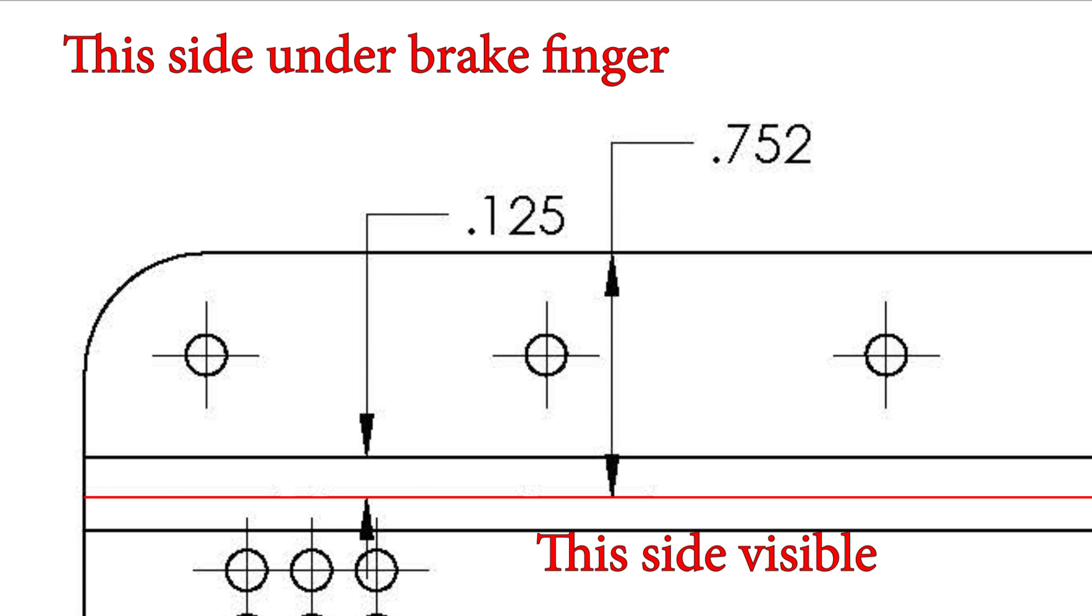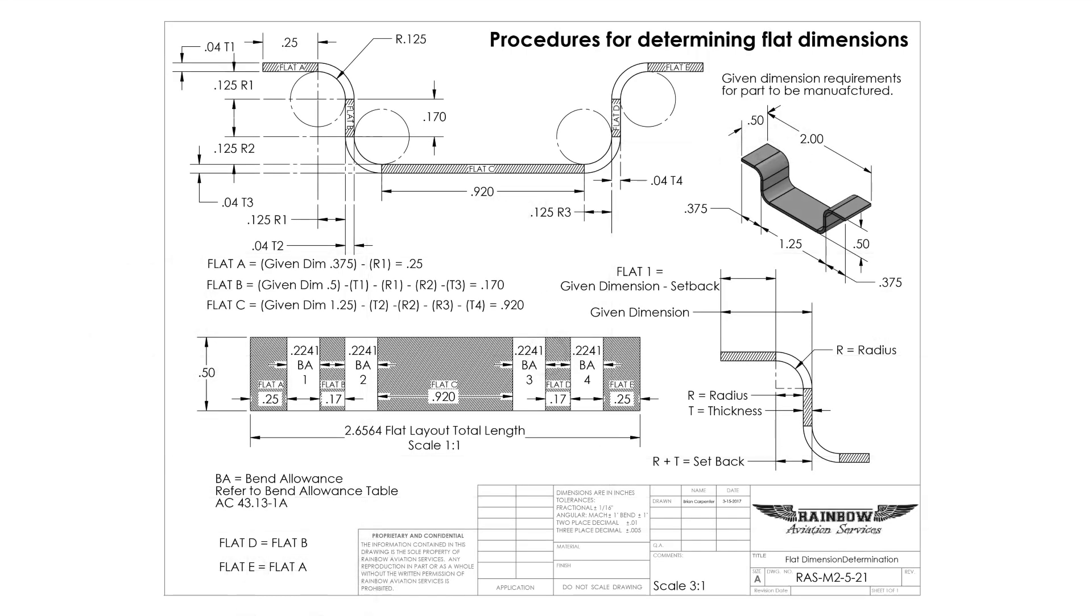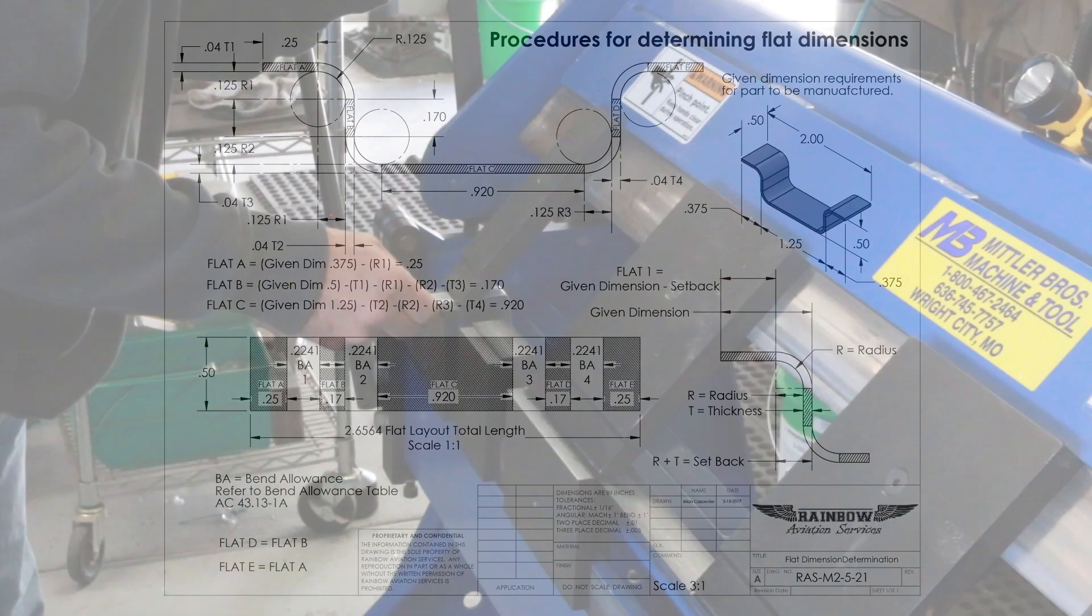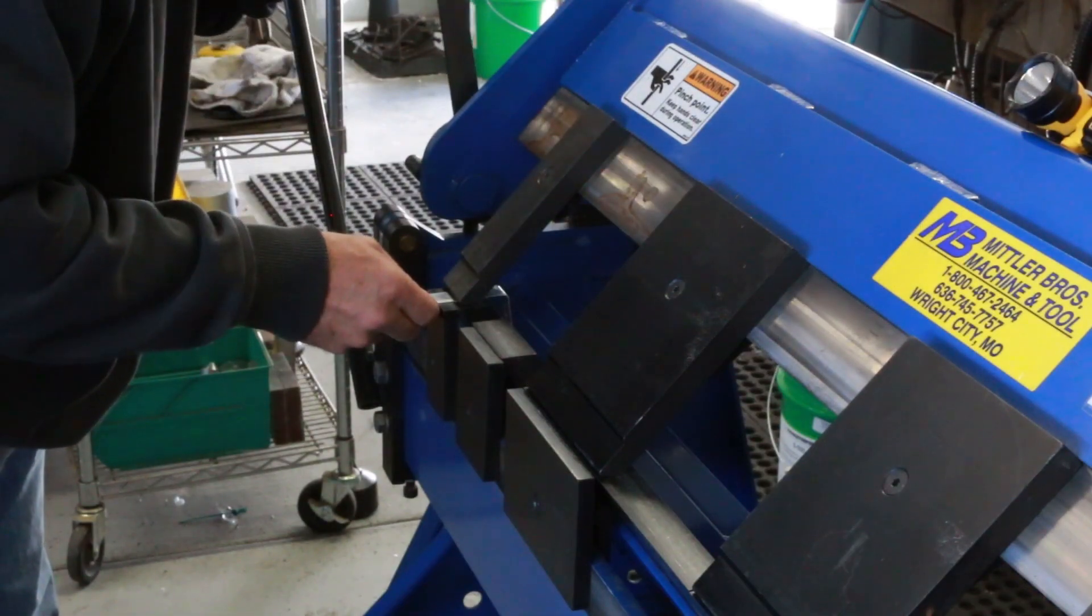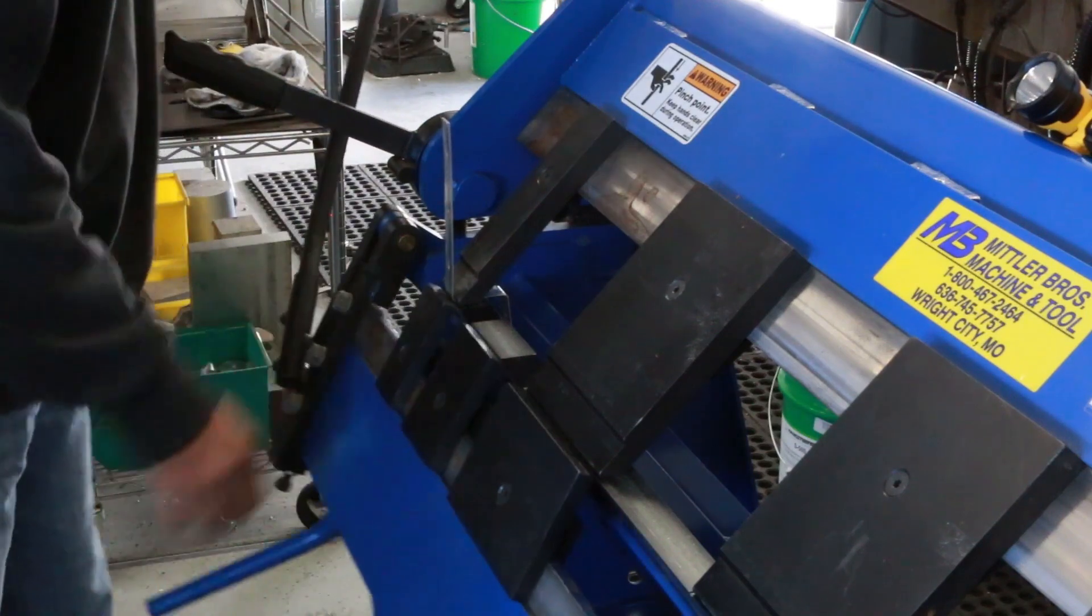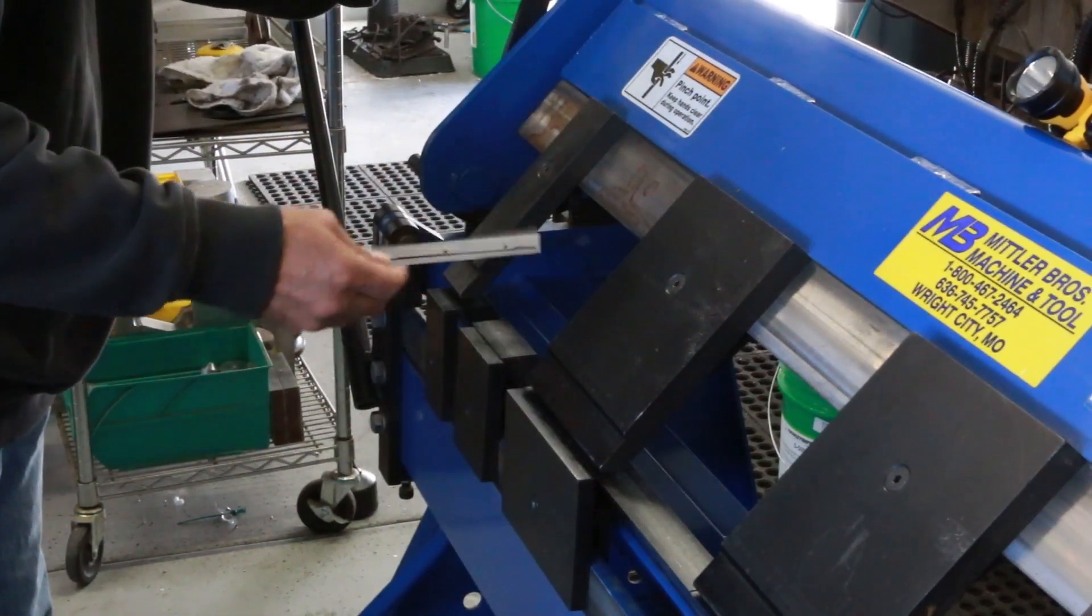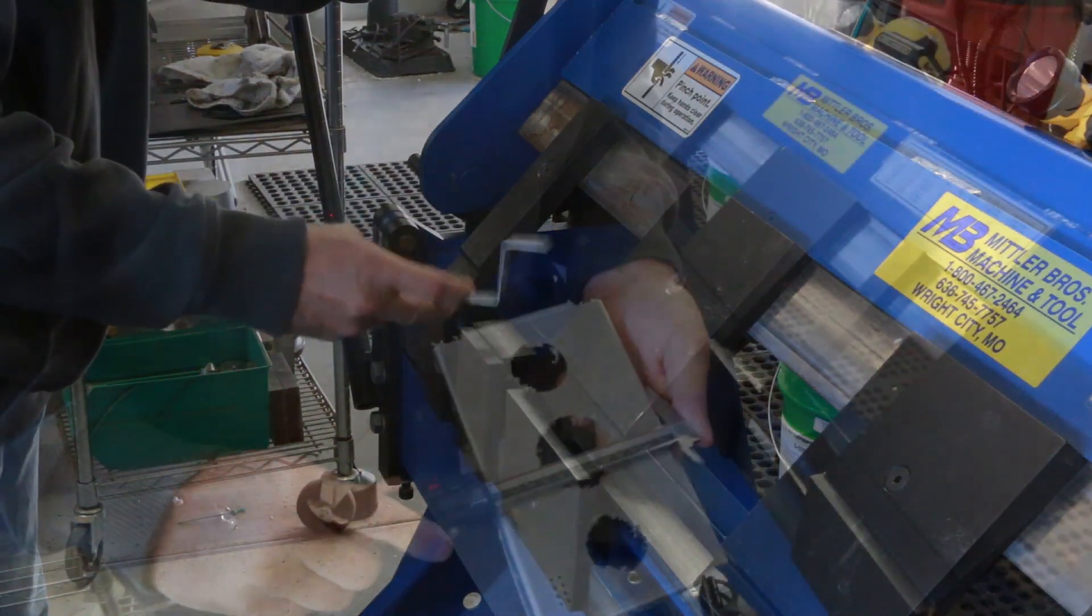On parts containing multiple bends, you may find it more convenient to place the sight line on your layout after you decide which orientation is necessary. This will allow you to check for interference between the bent legs and the clamping fingers.